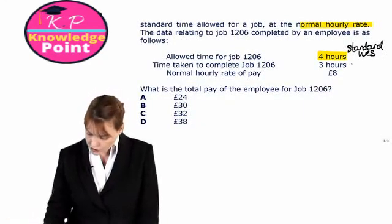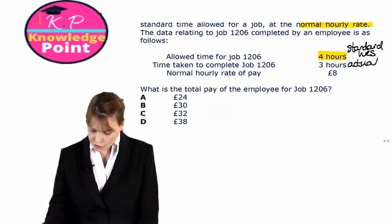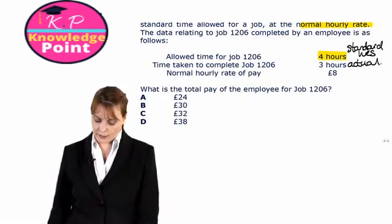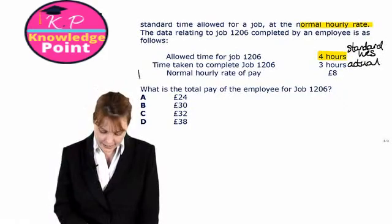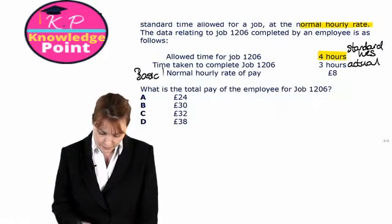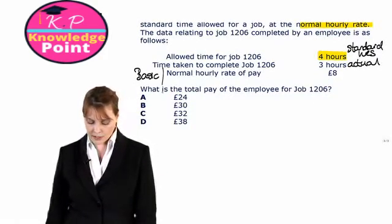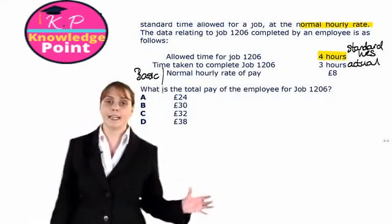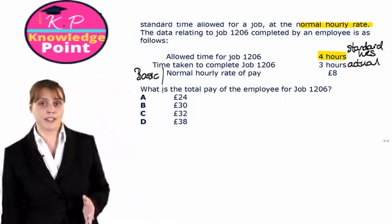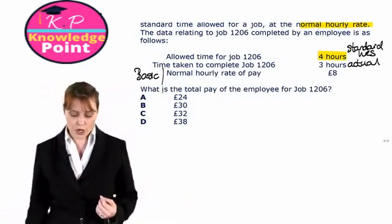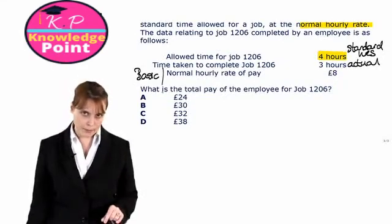We are told that the allowed time for job 1206 was 4 hours. So this is our standard hours for this particular job. The actual time taken was 3 hours. And we have a normal or basic hourly rate of £8. And all we have to calculate is how much will this individual be paid in total for this particular job.